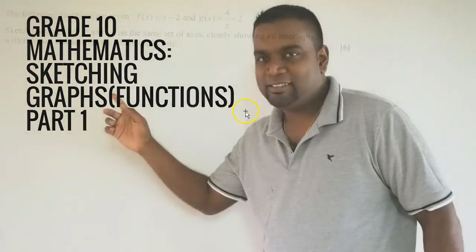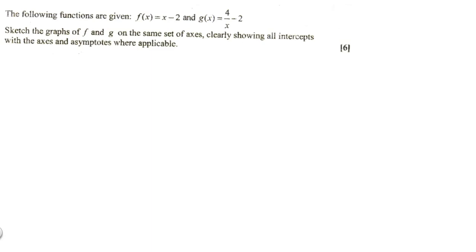As you can see in this example, we're dealing with functions and an examination type question. We need to read the example carefully. We've got F(x) equals to x minus 2 and G(x) equals to 4 over x minus 2. So this is a straight line graph and this one is a hyperbola.